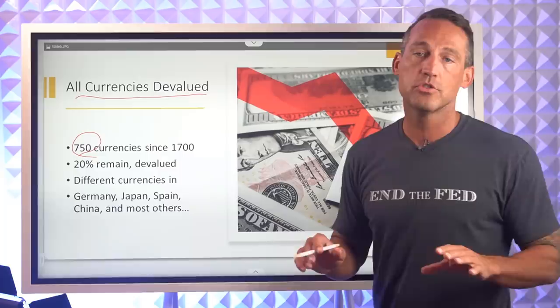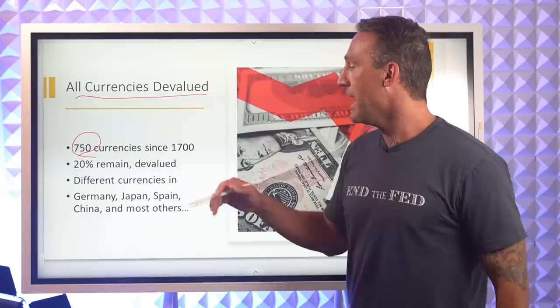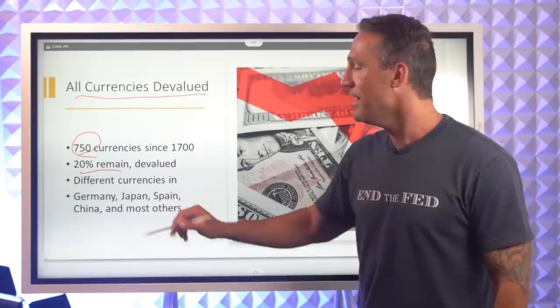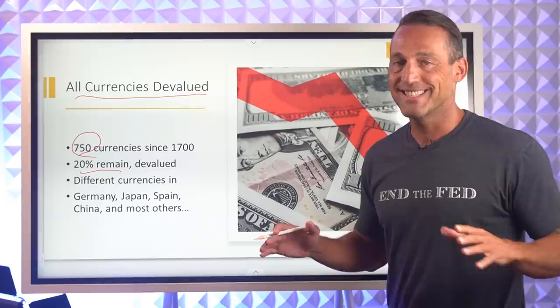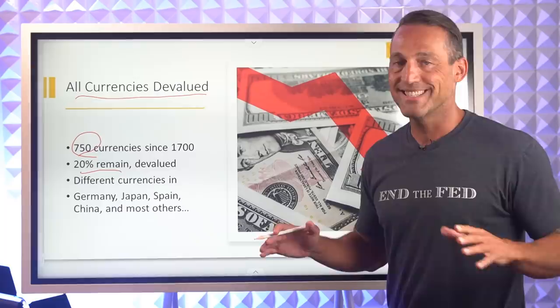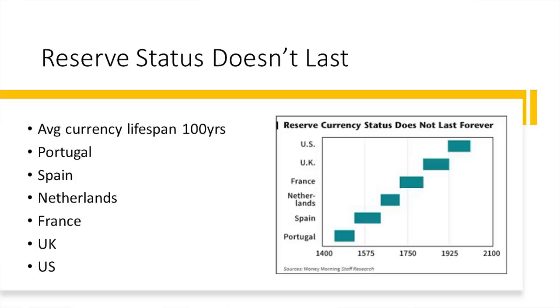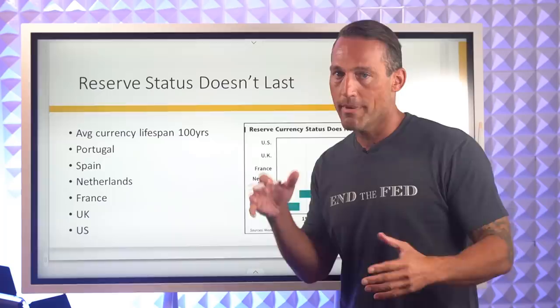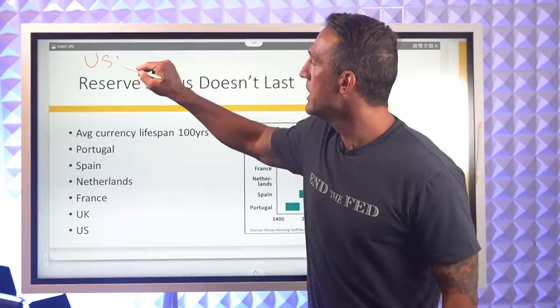Throughout history, conclusively, all currencies are devalued. Since the 1700s we've seen 750 different currencies, and all of them have been wiped out except for 20%. But of the 20% that remain, they've all been devalued — meaning they buy less than they did originally. Germany, Japan, Spain, China — all used to have different currencies. Sometimes you have to zoom out to get perspective on this.